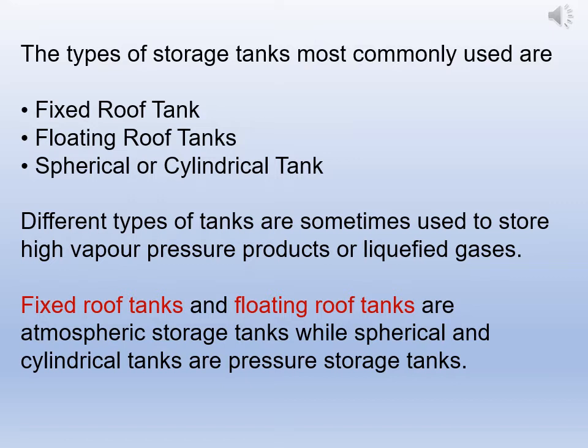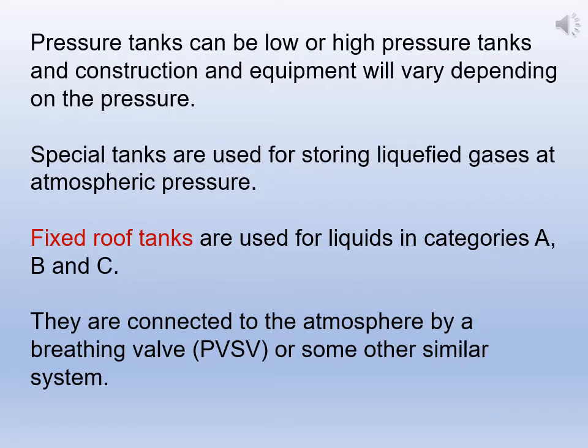Usually crude oil is stored in fixed roof or sometimes in floating roof tanks. Pressure tanks can be low or high pressure, and construction and equipment will vary depending upon the pressure. Spherical tanks are used for storing liquefied gases at atmospheric pressure. Fixed roof tanks are used for liquids in Category A, B, or C. They are connected to the atmosphere by a breathing valve system called PVSV — pressure vacuum safety valve — or some other similar system.